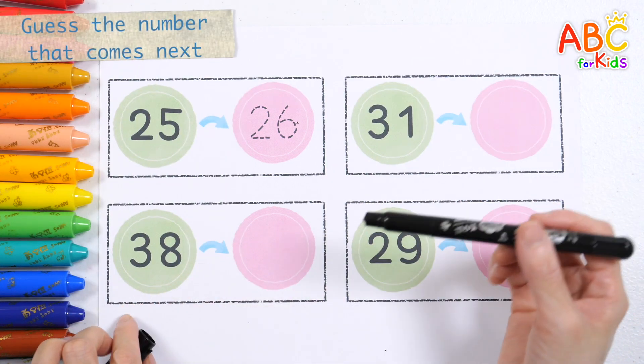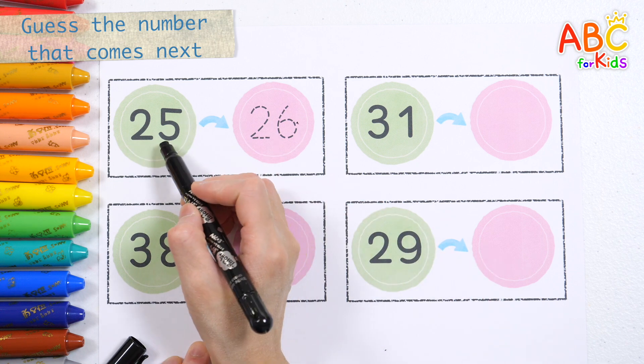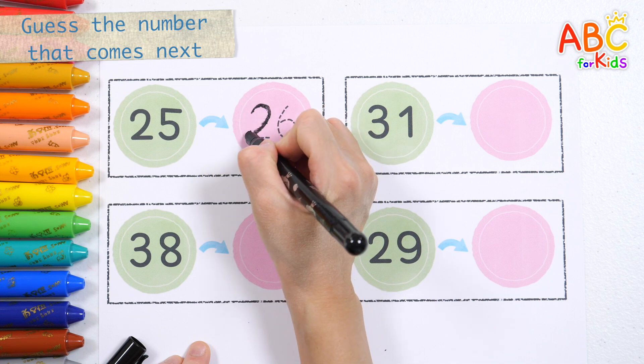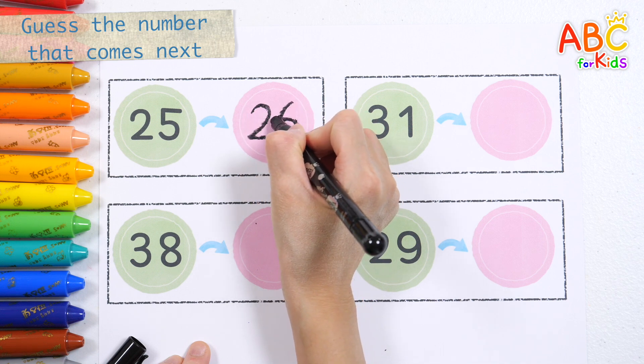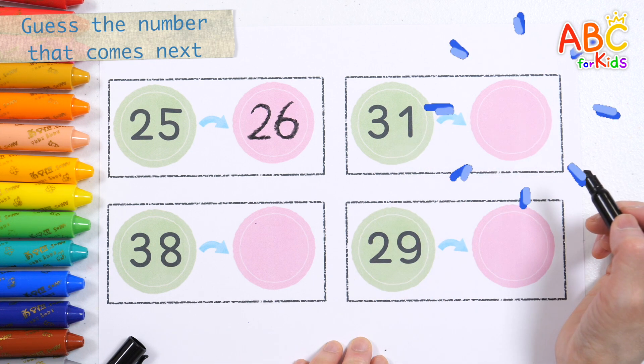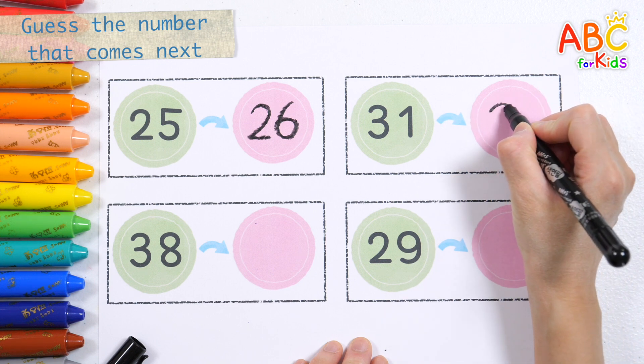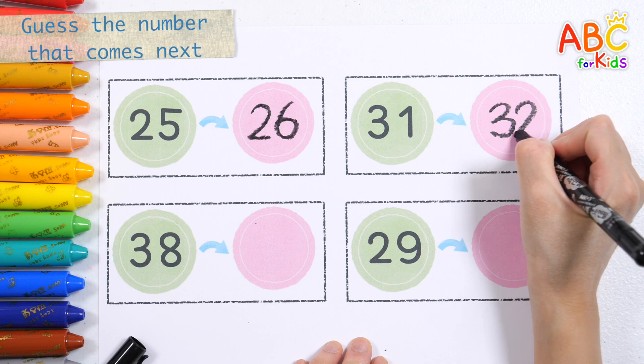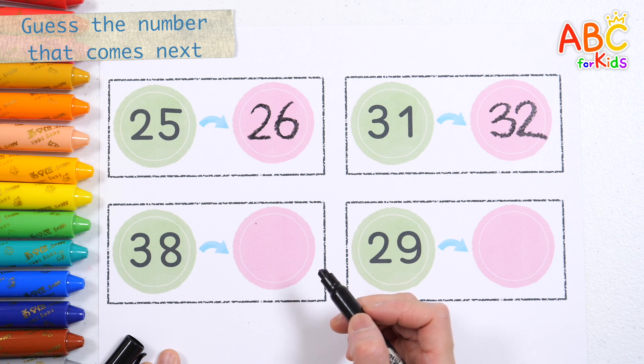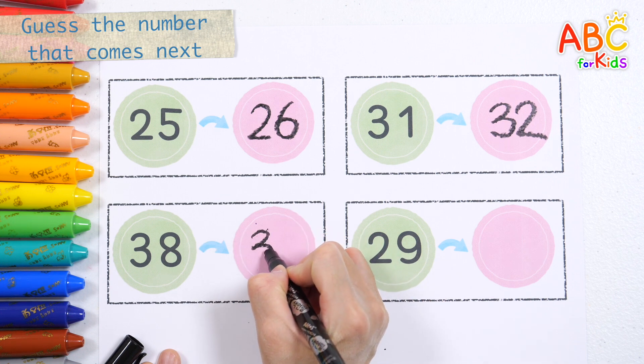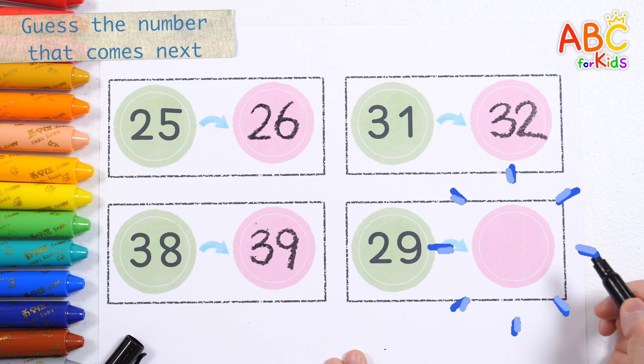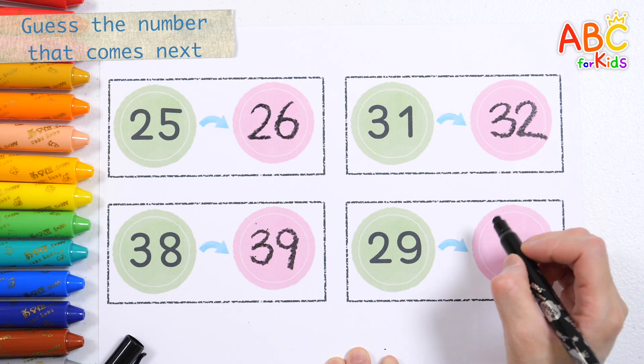Shall we write down what number comes after each number? 25. Let's write down the numbers. 26. 31. 32. 38. 39. 29. 30.